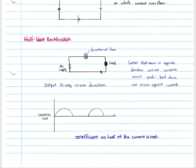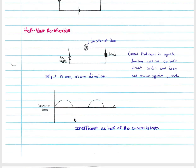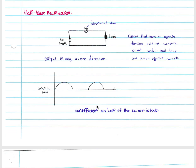There is a short circuit and the load does not receive current. The current that moves in the opposite direction will not complete the circuit, and the load does not receive that current — the output is only in one direction. When moving clockwise we will have half a wave of current, and we lose the other part because it cannot pass through the diode. This is called half wave rectification — we are rectifying to DC current, it is only flowing in one direction, but we are losing half our current, which is very inefficient.